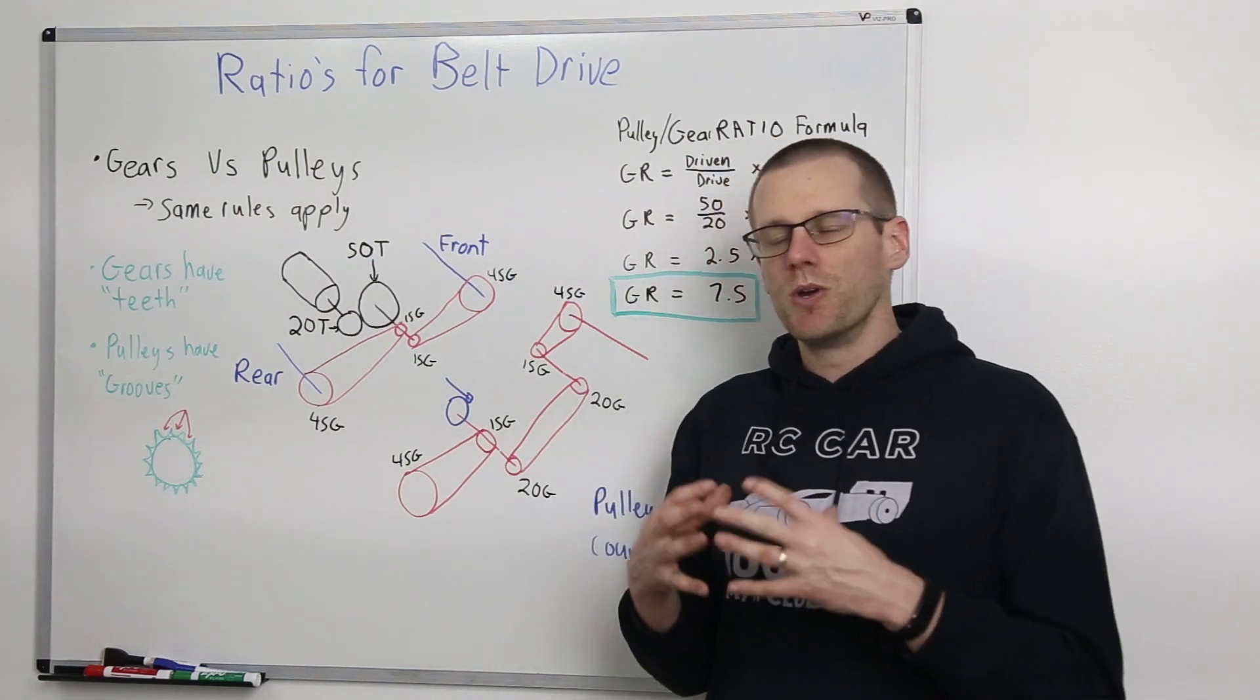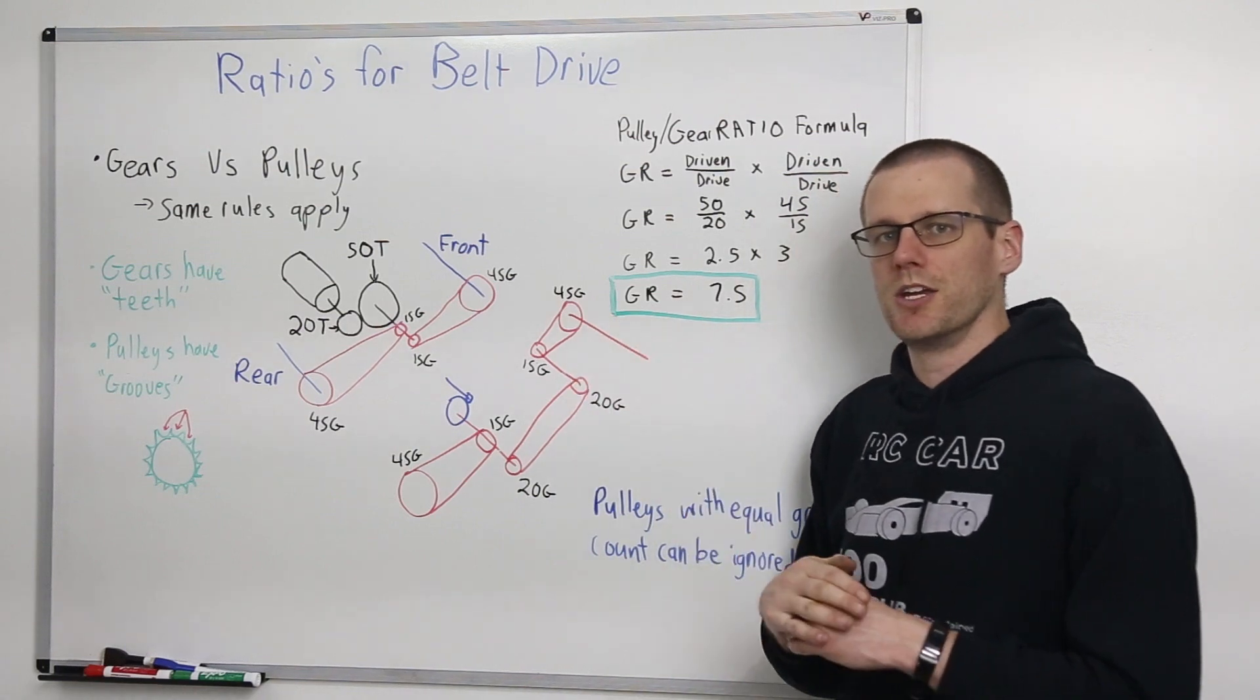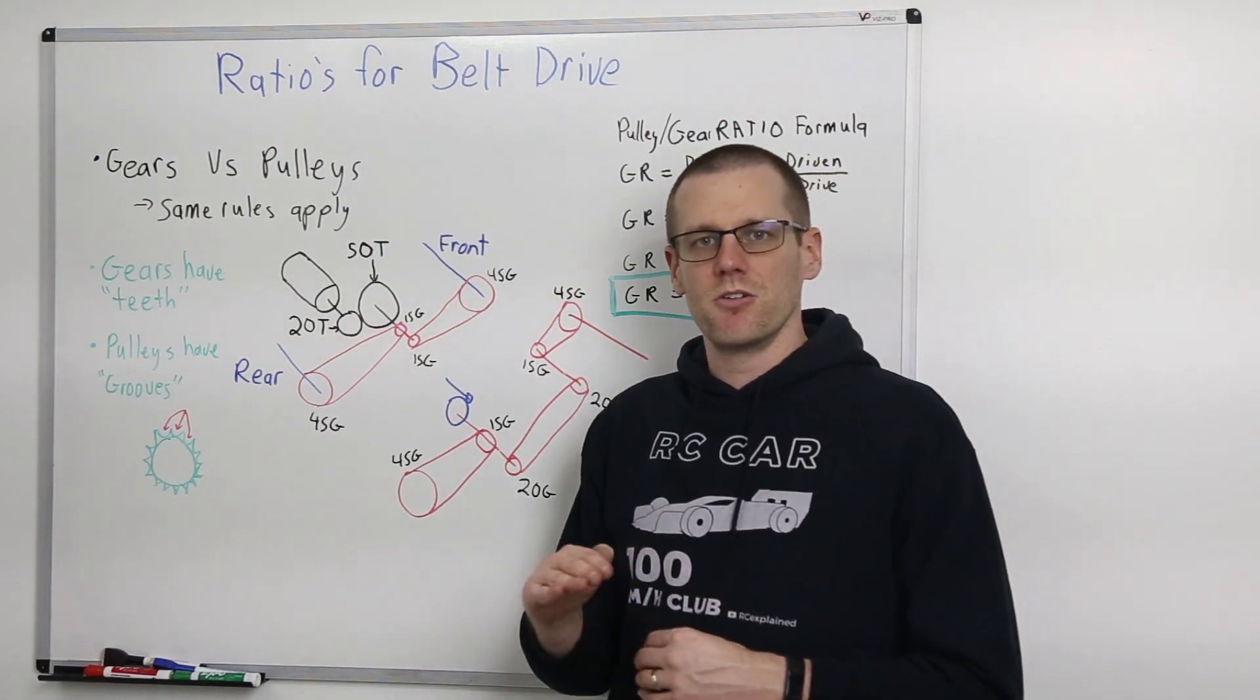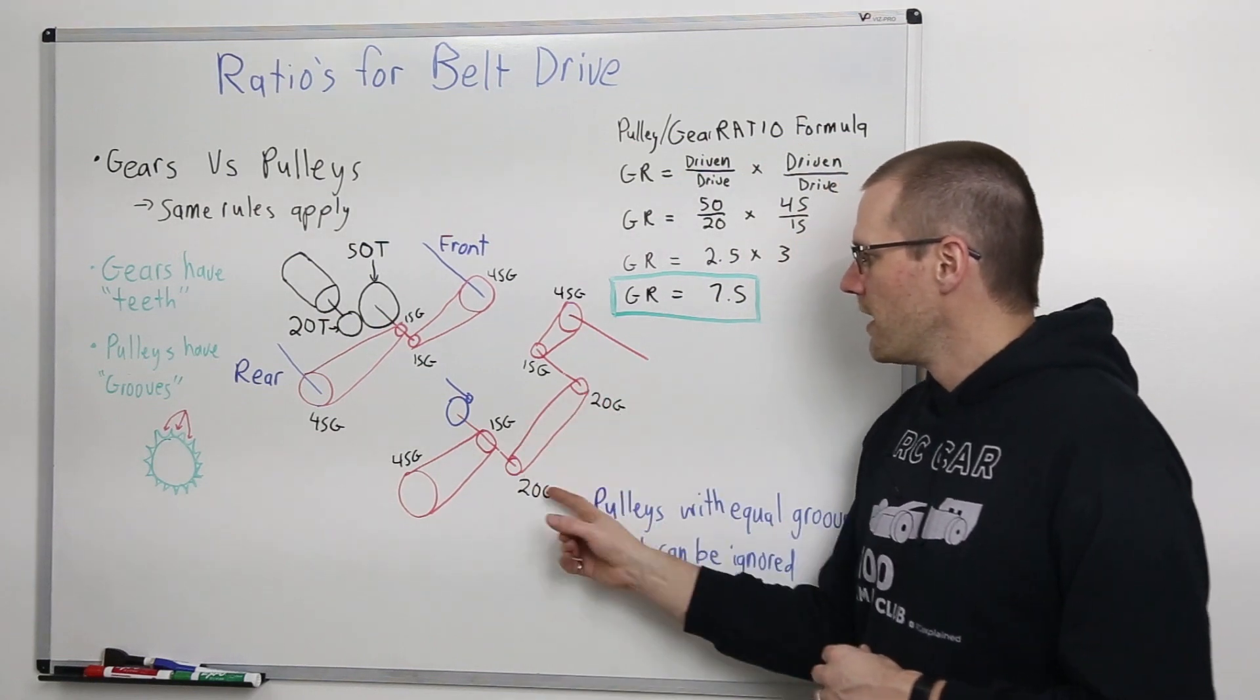A one-to-one ratio is simply just to transfer power from here to a different location, and it's not affecting our gear ratio whatsoever. So that's why we can end up removing that there.